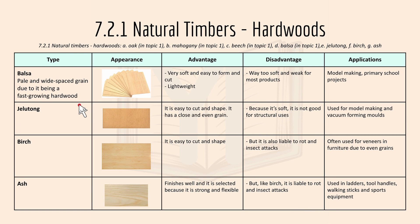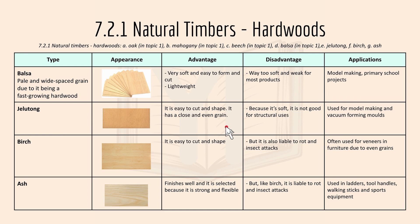Balsa has a pale white spaced grain due to it being a fast-growing hardwood. It's very soft, easy to form and cut, and it's lightweight. Its disadvantage is that it's way too soft and weak for most products. Applications include model making and primary school projects. Jelutong is easy to cut and shape with a close and even grain. Because it's soft but still a hardwood, it is not good for structural uses, and applications include model making and vacuum forming molds, similar to balsa wood.